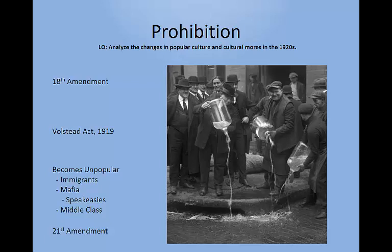Let's talk about temperance — the outlawing of alcohol, or prohibition. This was not a new issue; the temperance movement had been around since the 1830s. What finally pushed it over the edge at the end of the Progressive Era was the anti-Germanism of World War I. Drinking was very much part of German culture, and since all things German were bad during the war, prohibition became law in 1919 with the passage of the 18th Amendment, which outlawed the manufacture, sale, or transportation of intoxicating liquors.